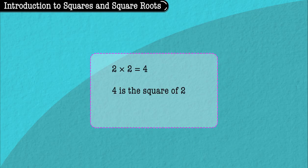For example, when 2 is multiplied by 2, we get 4. Hence we say 4 is the square of 2. Or else we can write 2 into 2 as 2 raised to 2 or 2 square, which is equal to 4.